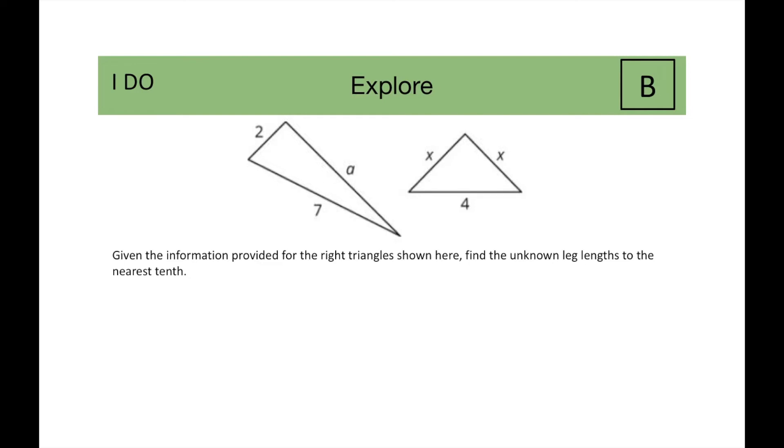For the first triangle, A squared plus two squared is equal to seven squared, which means that A squared is equal to forty-nine minus four, which is equal to forty-five, so A is the square root of forty-five.